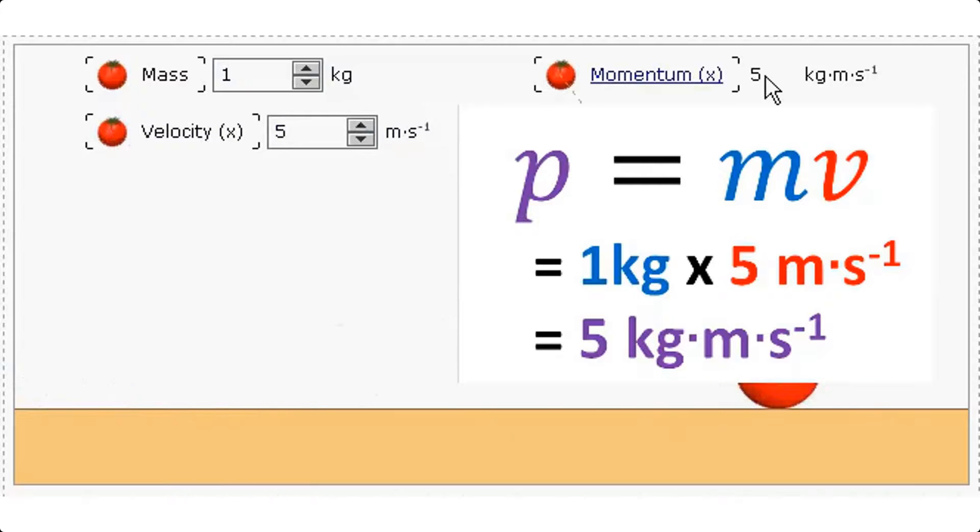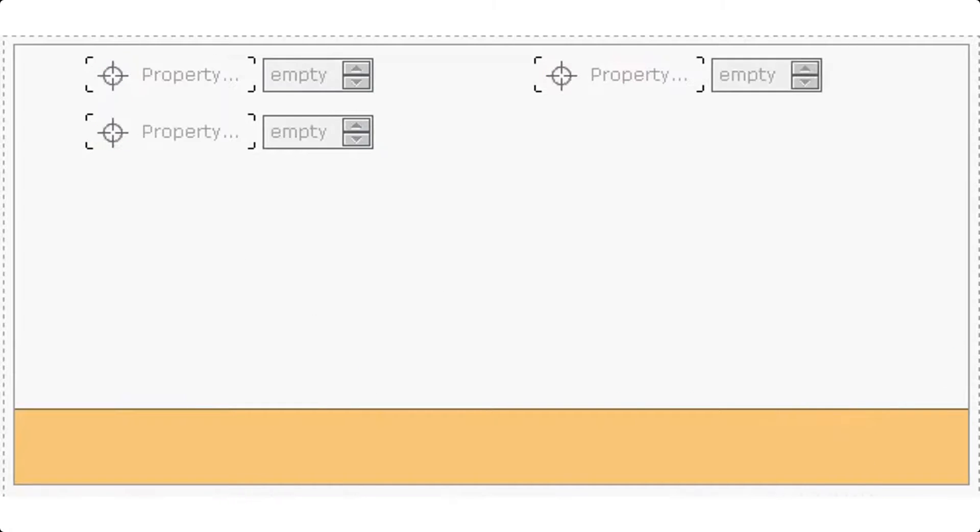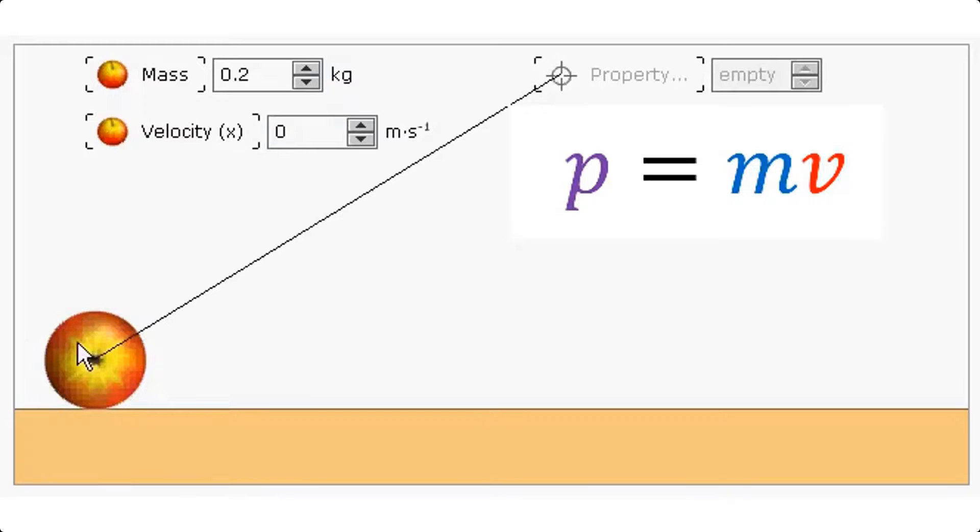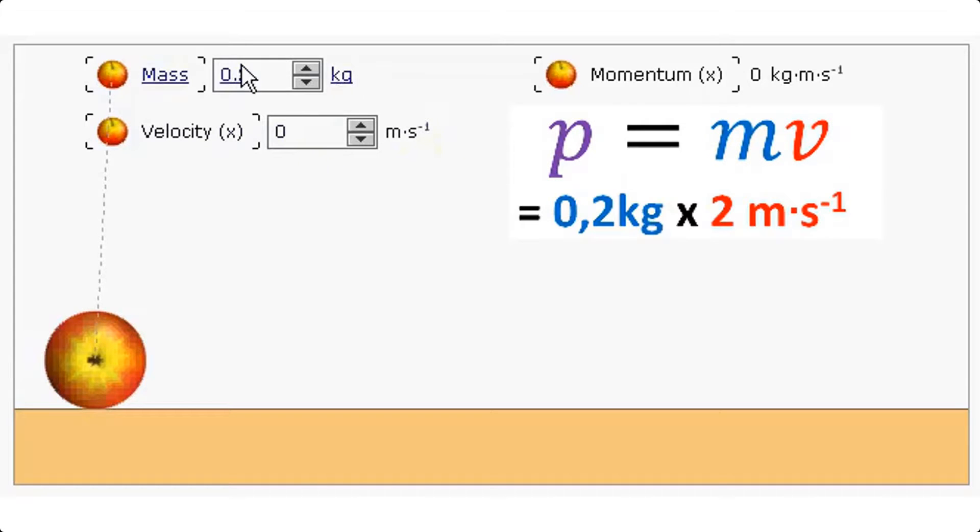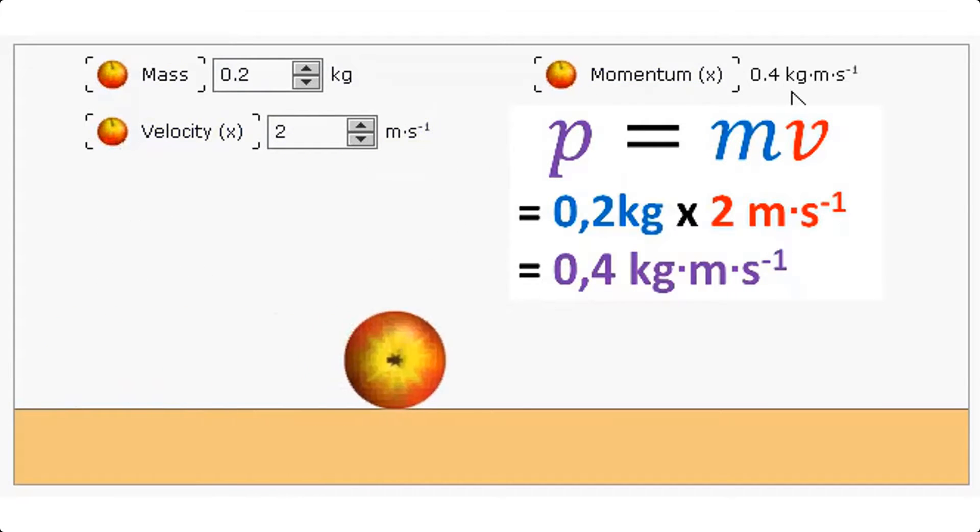And let's return the apple. What will the momentum of the apple be when its velocity is 2 meters per second? Remember momentum equals mass times velocity. 0.4 kilogram meters per second.